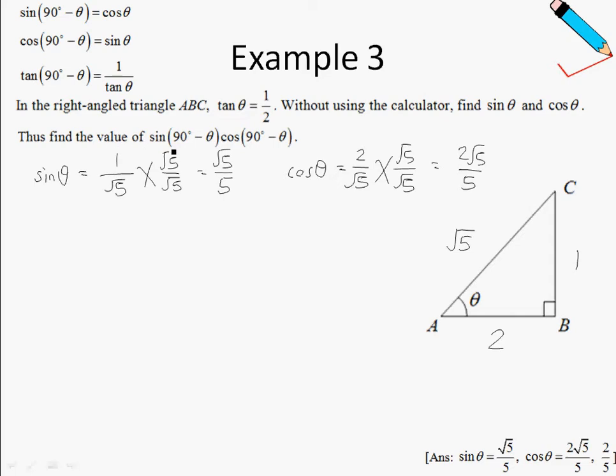Now moving on, we want to find the value of sine 90 degrees minus theta, multiplied by cosine 90 degrees minus theta. So let me just write this out first.